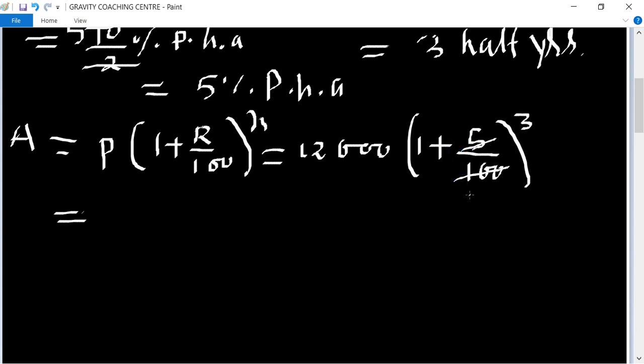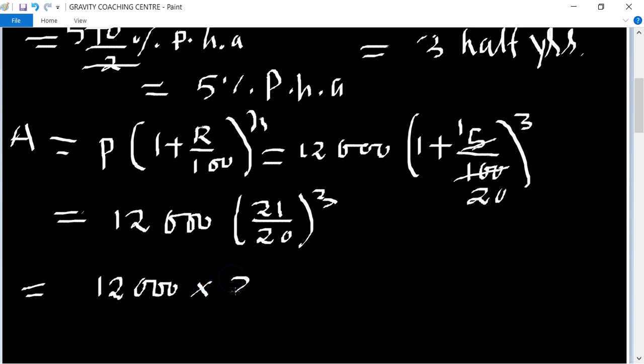So cancel by 5 into 20. After taking LCM it will become 21 by 20 to the power 3. Equals 12,000 multiplied by 21 upon 20, multiply 21 upon 20, multiply 21 upon 20.